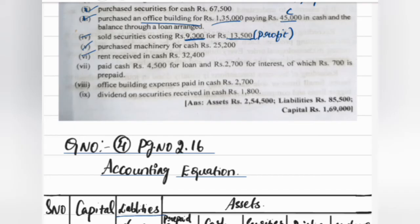Paid cash for loan repayment — ₹4,500 for the loan principal. This is a tricky part but we must understand. We will work through the correct answer using a working note. Cash is ₹4,500 going out — loan is going to be paid. Then ₹2,700 is also going to be paid — loan decreases.